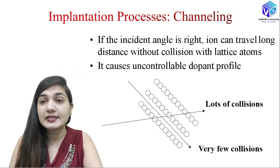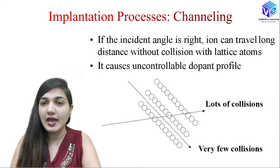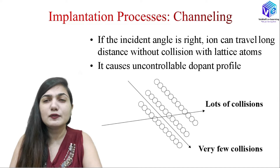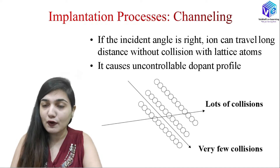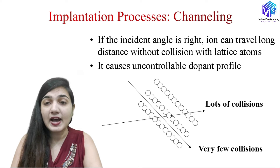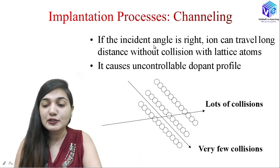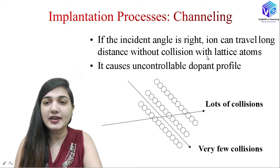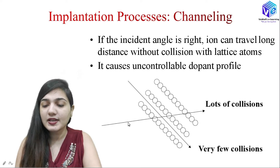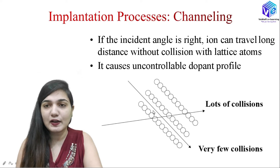If the incident angle is right, the ion can travel a longer distance without collision with the nucleus. Since there is no significant scattering in the electronic stopping mechanism, the ion can travel along a straight-line path if it is encountering only electronic stopping. It has to collide with the nucleus of the lattice atoms in order to get significant scattering. Here you can see two types of ion collision — the first incident angle and the second incident angle.